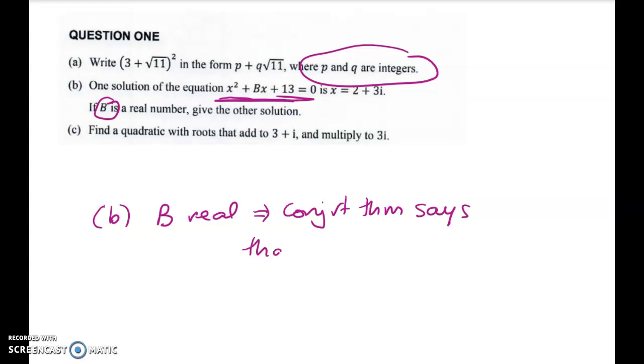So b is real, so the conjugate root theorem says that x = 2 - 3i is another, or the other solution.